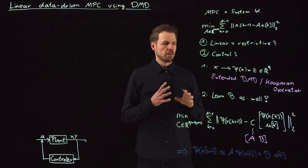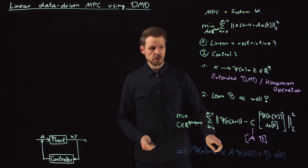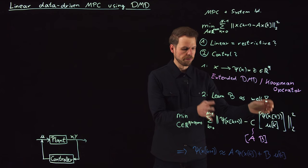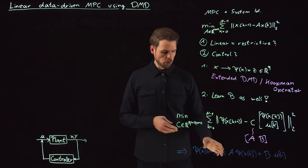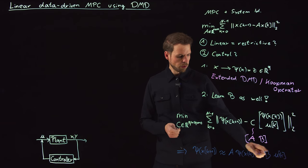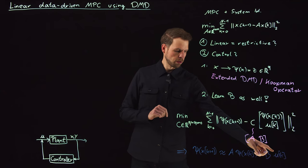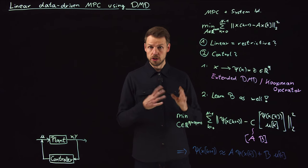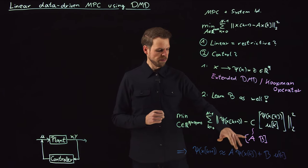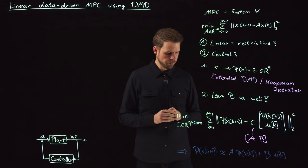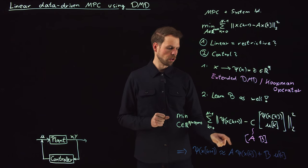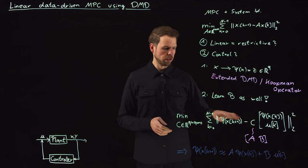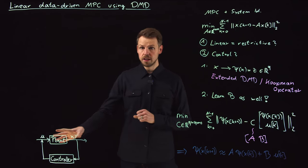So we have our Psi of XK plus 1, which is approximately A times Psi of XK plus B times UK. And so this is the dynamic mode decomposition with control or the extended dynamic mode decomposition with control. So with two very simple steps, we have now identified a system and this is an approximate sign because obviously we are still trying to identify a linear system for maybe nonlinear trajectory data. So we cannot expect this to be perfect. In particular, this linear relation can be very challenging if the original problem has nonlinear control dependencies, but maybe this would be leading too far.